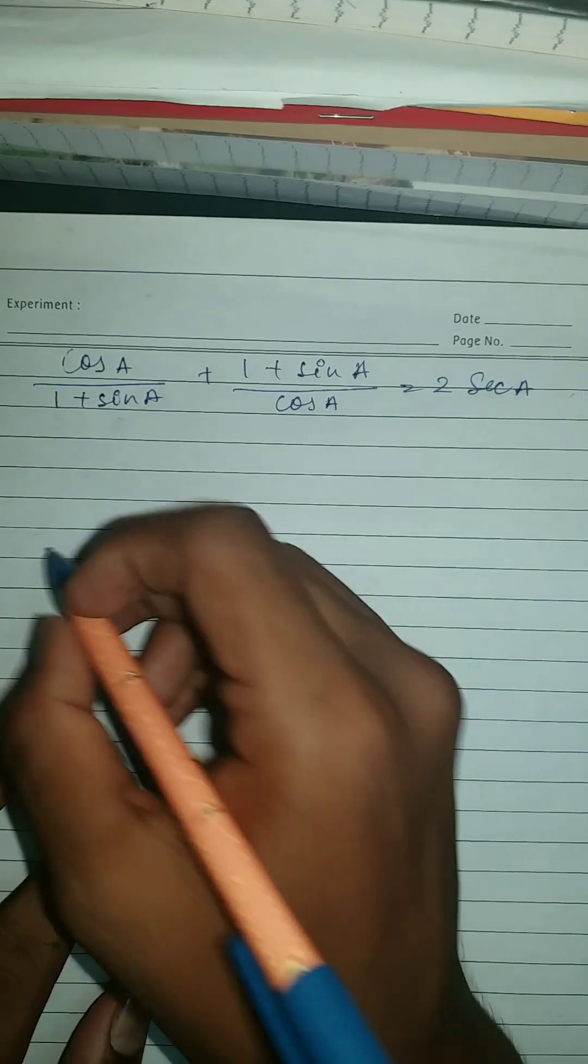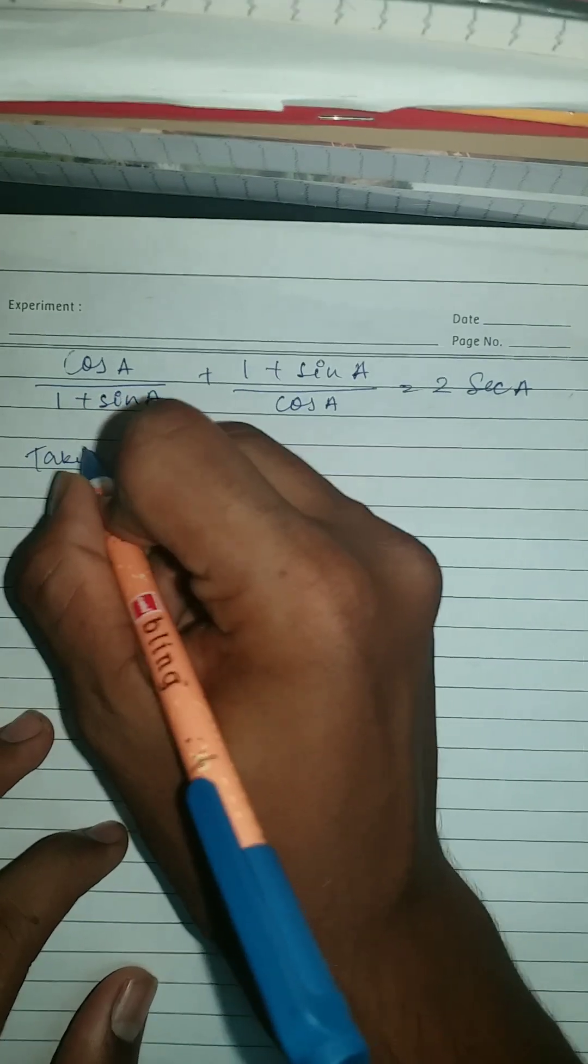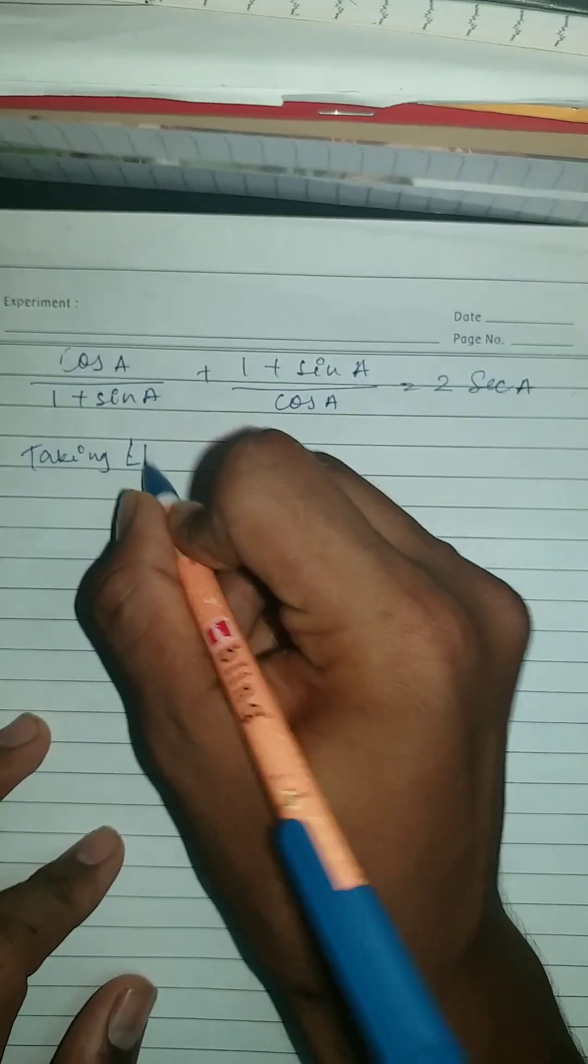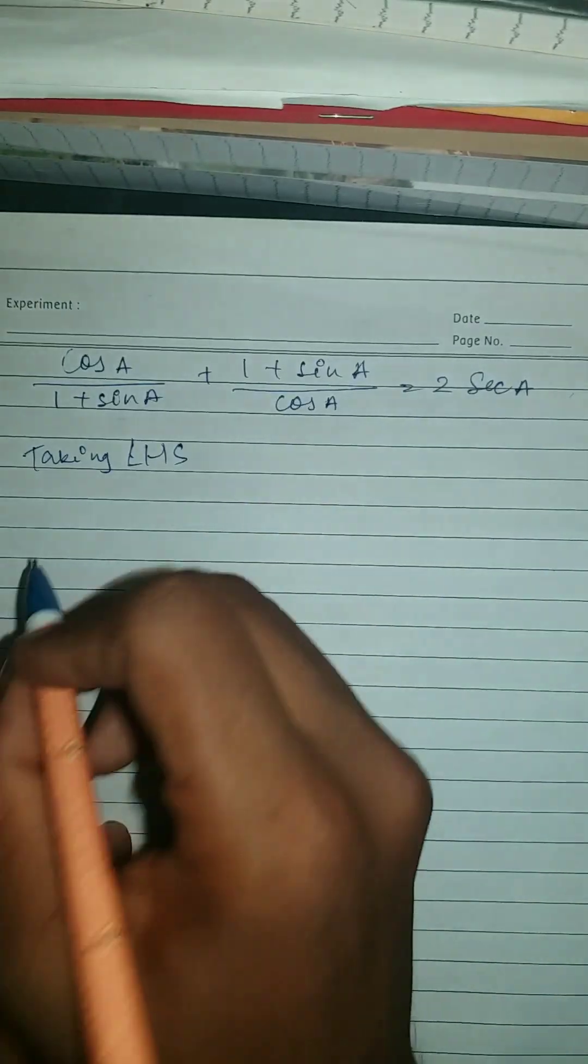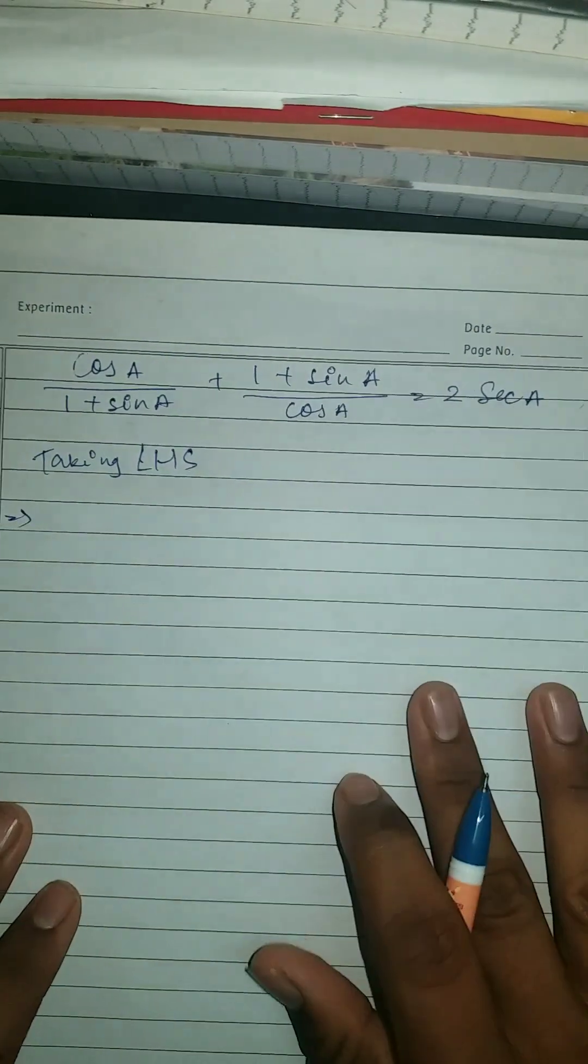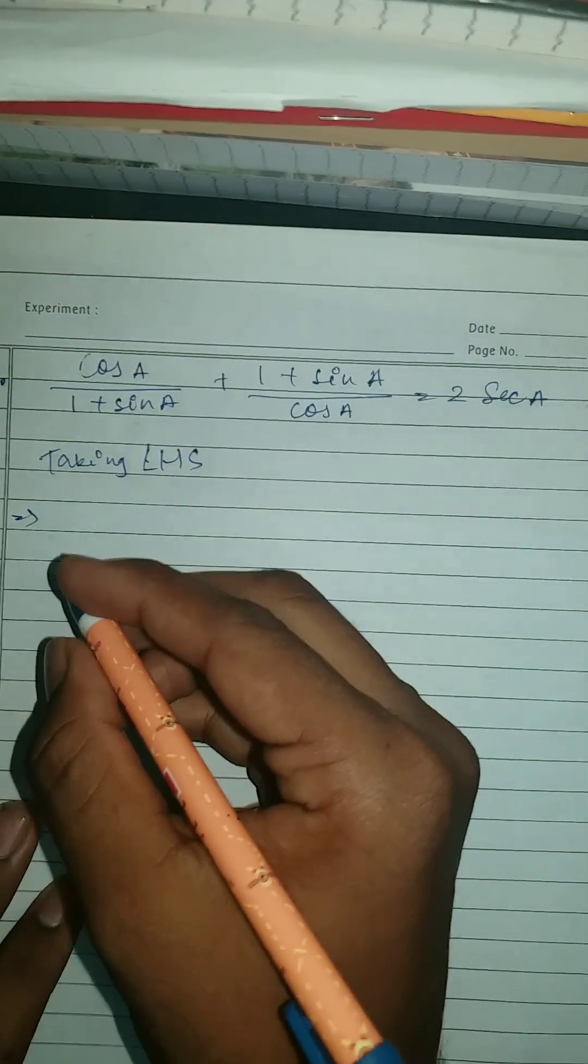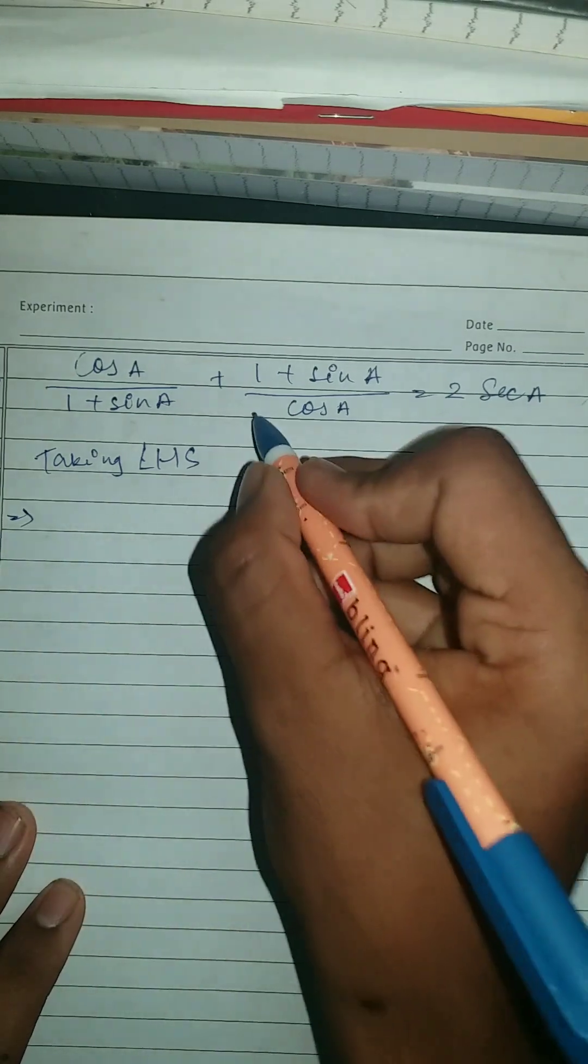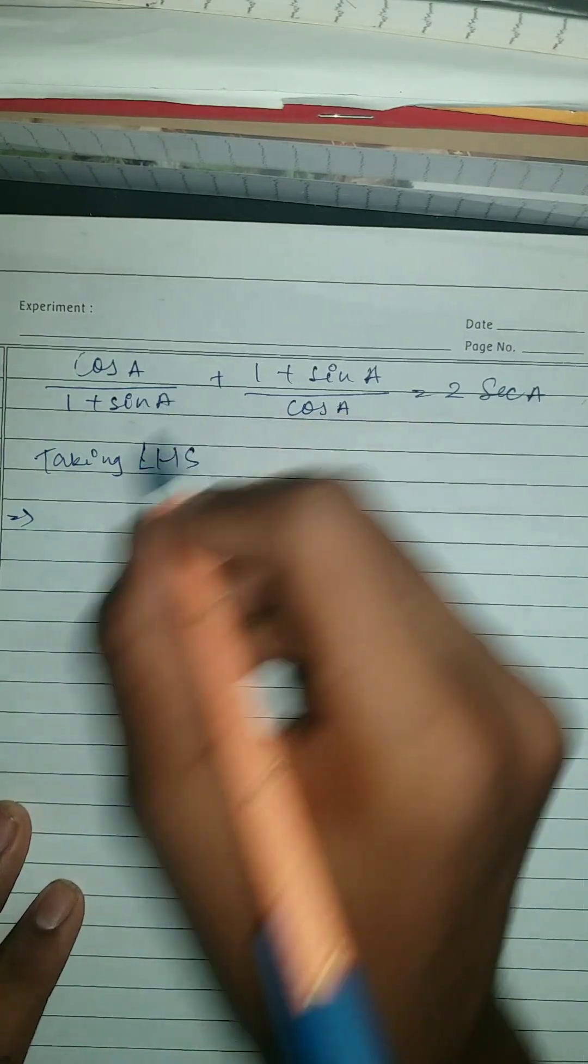Here we're going to take LHS. So let's write this, taking LHS. So by taking LHS, what we got, we're going to do cross multiplication.